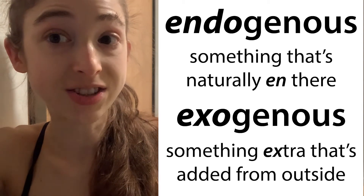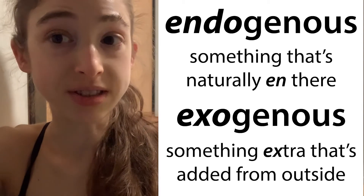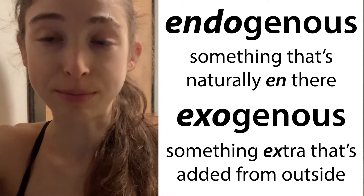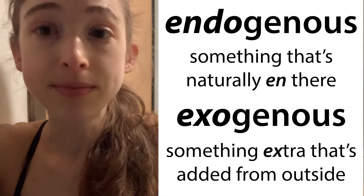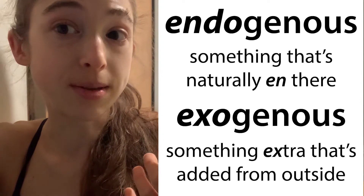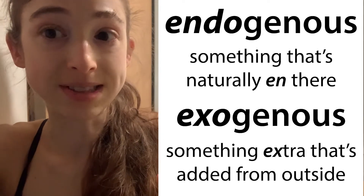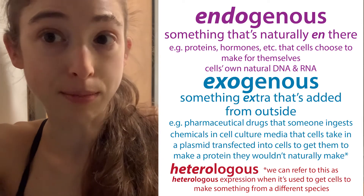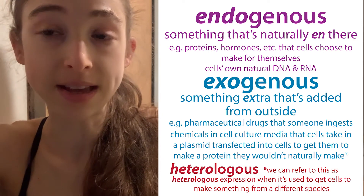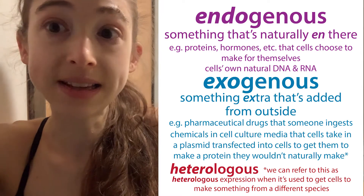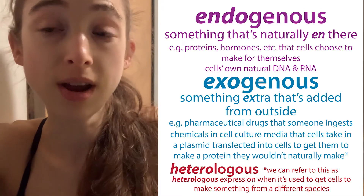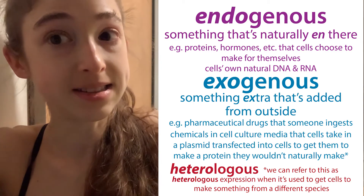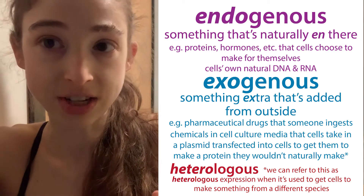Endogenous refers to something that's naturally there, like a protein that a cell makes for itself and the DNA that it has to make that protein naturally. Whereas exogenous refers to something extra that's added from the outside, such as if we put DNA instructions for making a protein into cells and get them to make it, or something like a pharmaceutical drug that your body isn't making itself — it's taken from the outside.